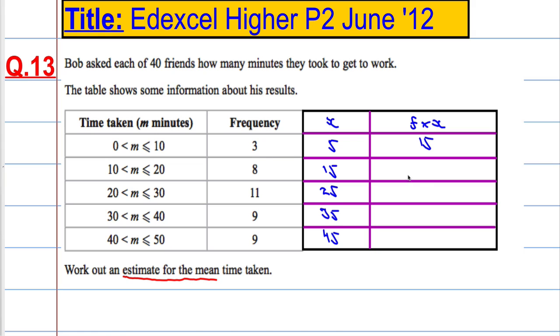8 times 15. Let's see, 4 times 15 is 60, so that's going to be 120. This would be 275.